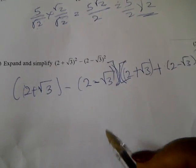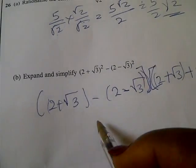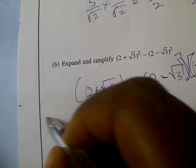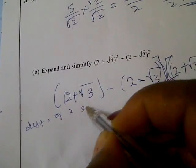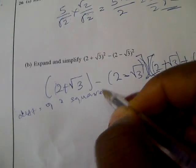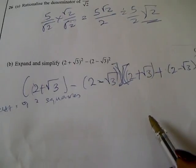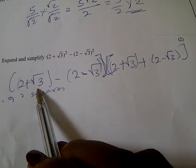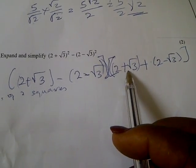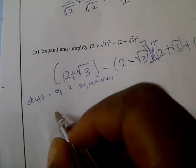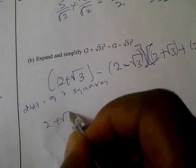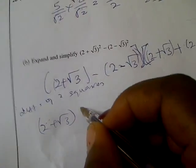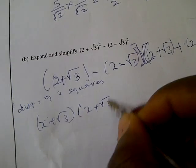Multiplying out — that's using difference of two squares — so you'd have (2 + √3) times (2 + √3).